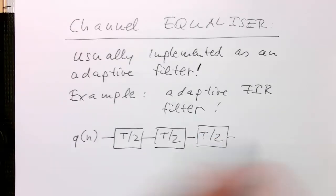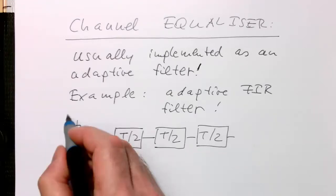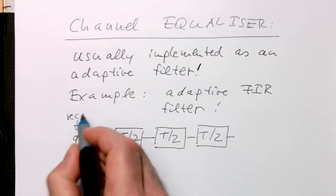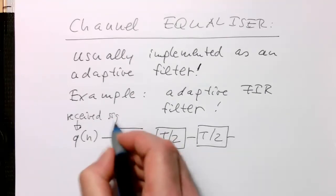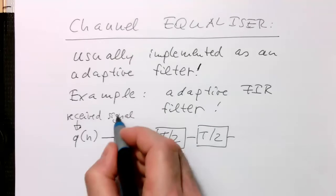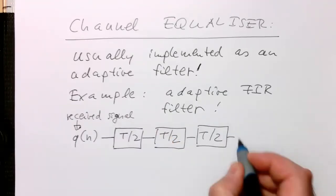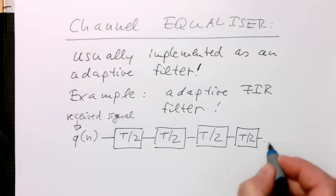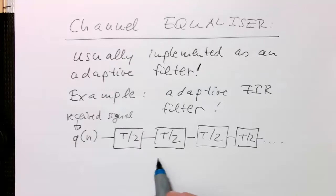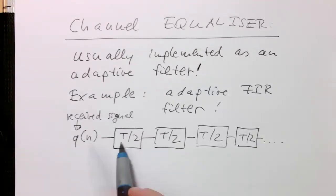So Q of N is our received signal with all the distortions introduced by the channel. And so we are creating a delay line here, which is sending our received signal through these time steps here.